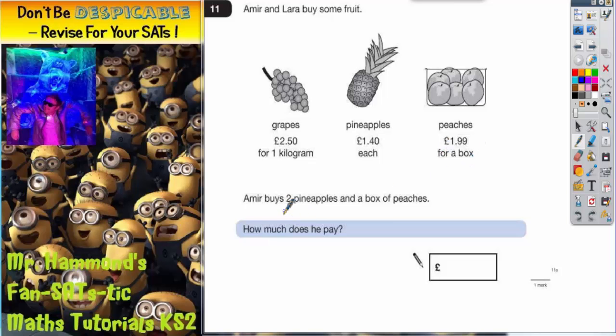Amir buys two pineapples, so we want two of those and a box of peaches so we want one of those. How much does he pay? Well first thing to do is to work out my two pineapples. Now you can probably do that in your head actually. Two lots of 40p is 80p and two lots of a pound is two pounds so it's going to be £2.80.